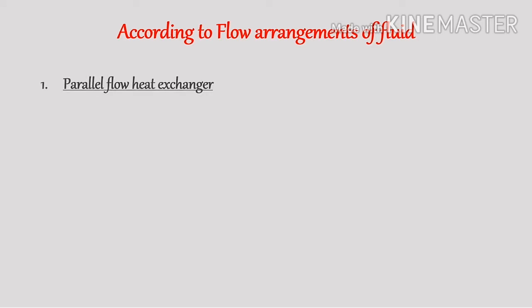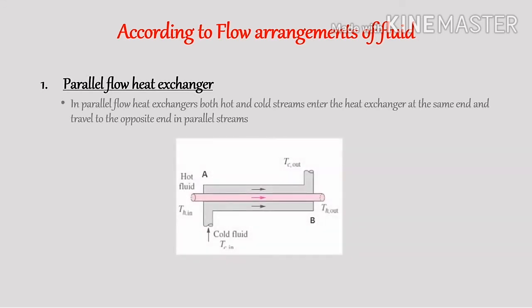According to the flow arrangement of fluid, the first type is the parallel flow heat exchanger. In a parallel flow heat exchanger, the hot and cold fluids enter together at one end, then flow parallel to each other in the same direction, and leave together at the other end. This type of heat exchanger needs a larger heat transfer area as compared to cross and counter flow heat exchangers.